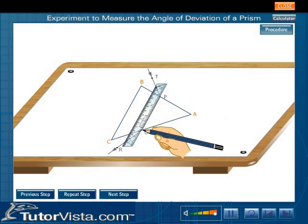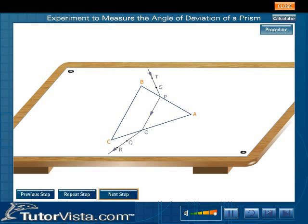Join PO. TP represents the incident ray, PO represents the refracted ray, and OR represents the emergent ray which is bent towards the base.